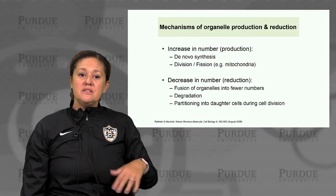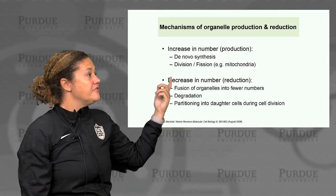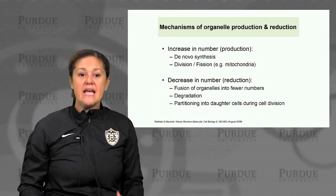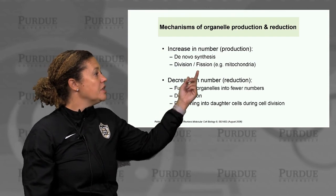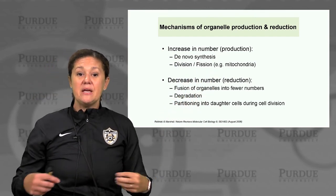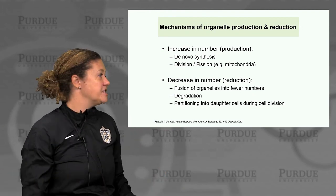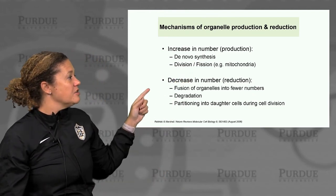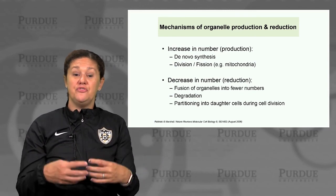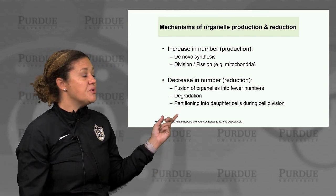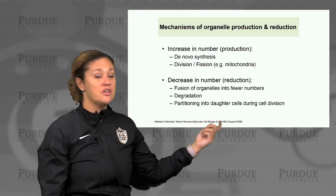Cells have, depending on the type, different mechanisms of organelle production or reduction. To increase the number, they could use de novo synthesis — creating the organelle from scratch by self-assembly of its building blocks — or via division or fission, such as mitochondria making more mitochondria, similar to cells making more cells by division. To decrease the number, organelles could fuse into a fewer number, or there could be active or passive degradation, as well as partitioning into daughter cells during division.